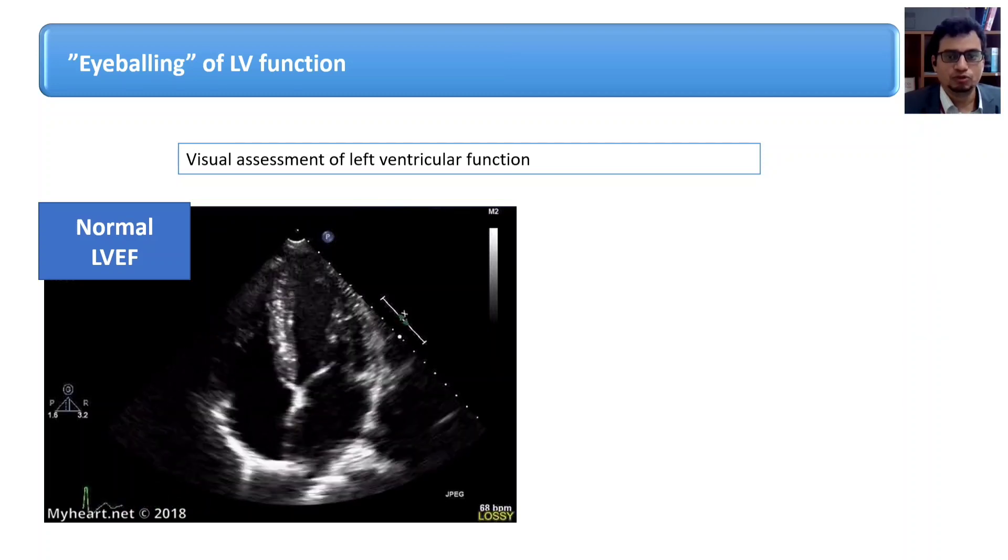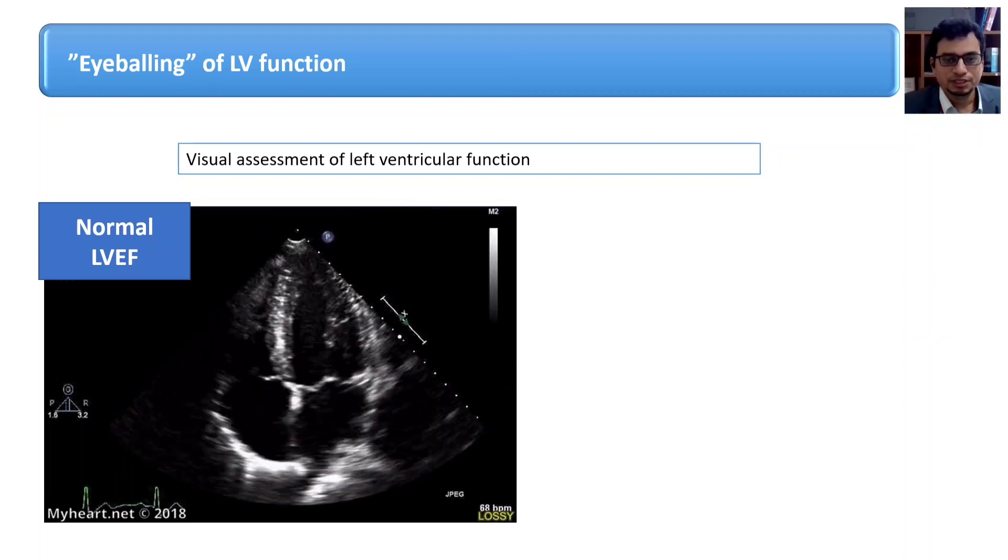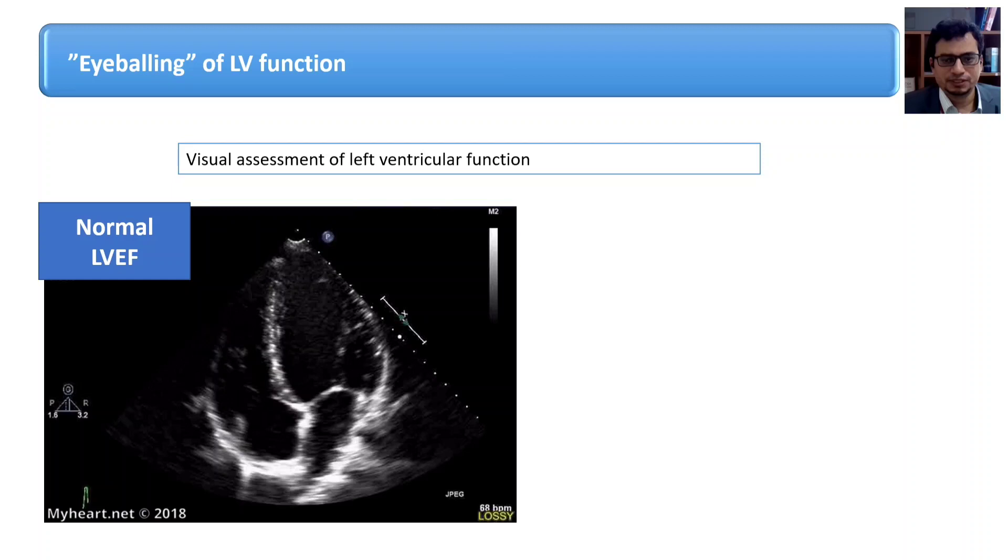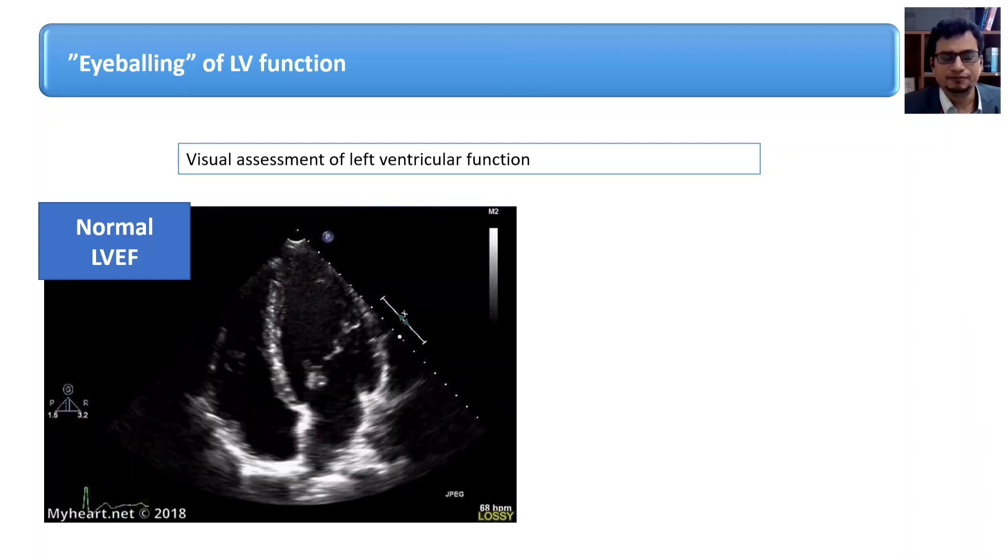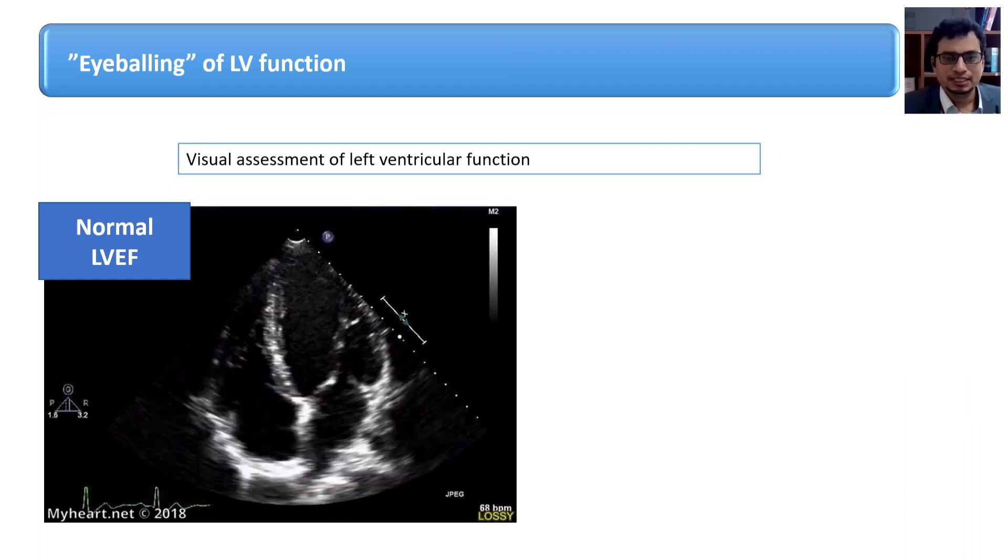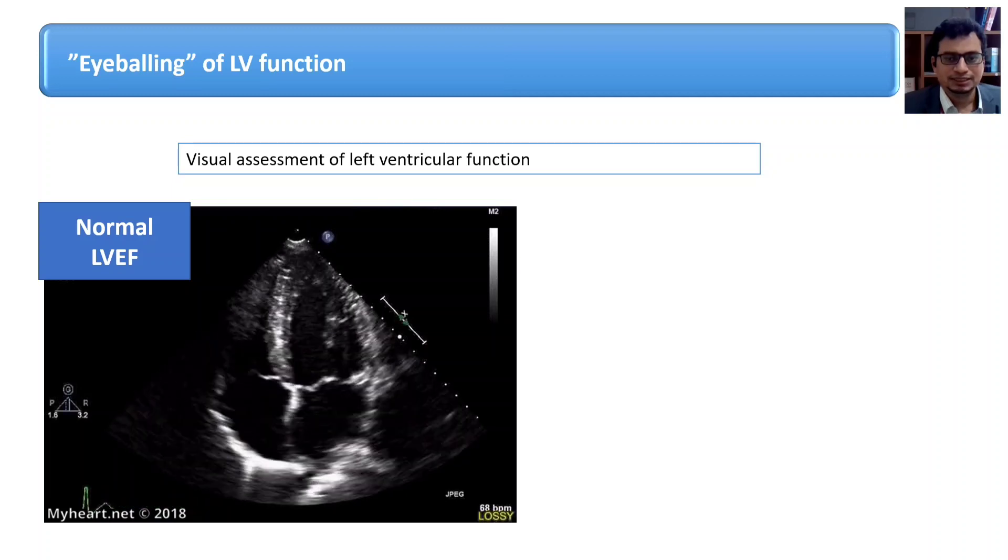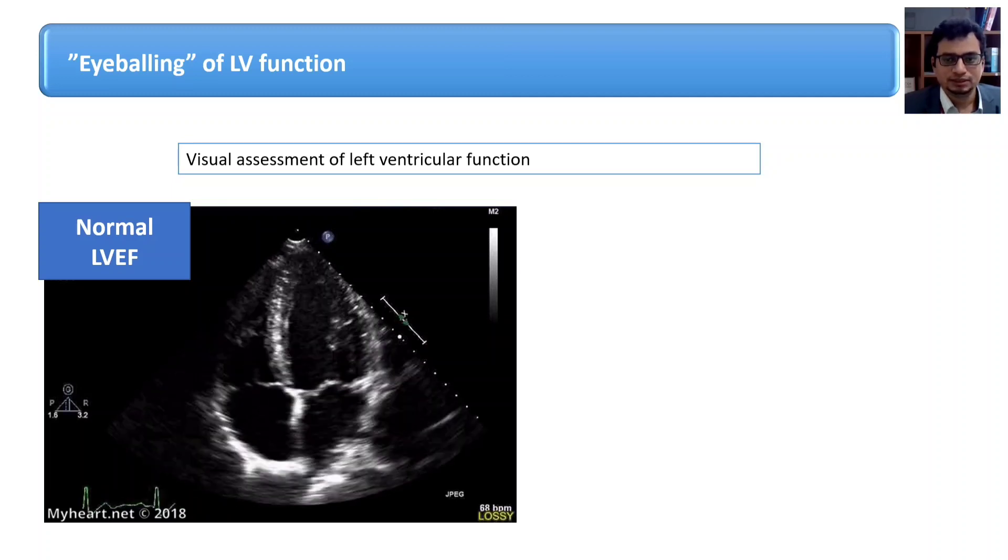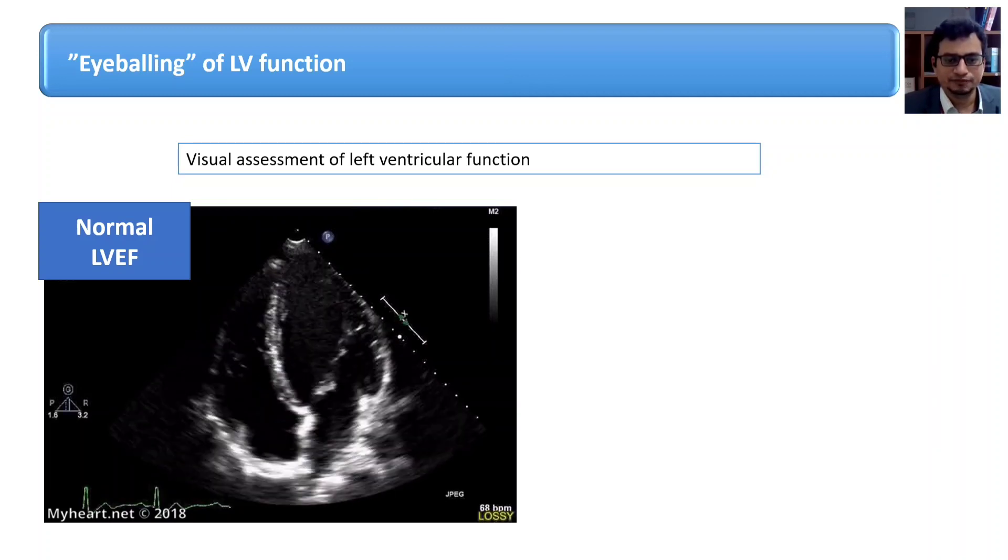Now the last method which we are going to learn is the eyeballing which is very commonly used by intensivists and a convenient method of estimating the left ventricular systolic function. It is based on the observation of the regional myocardial movement.